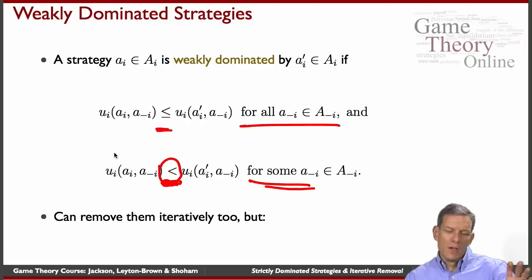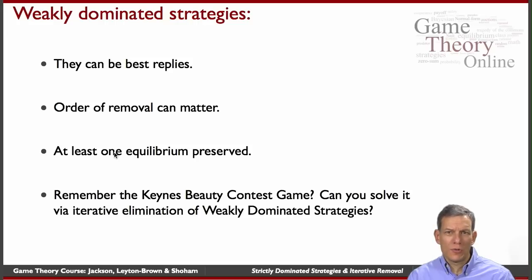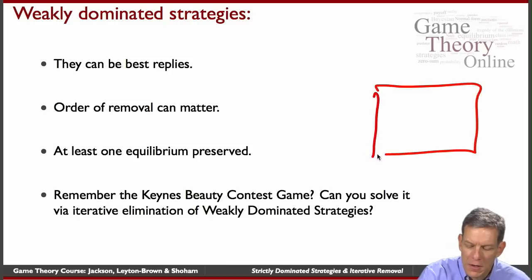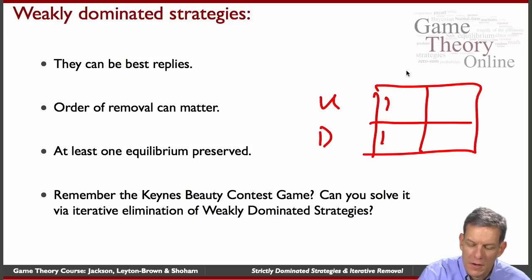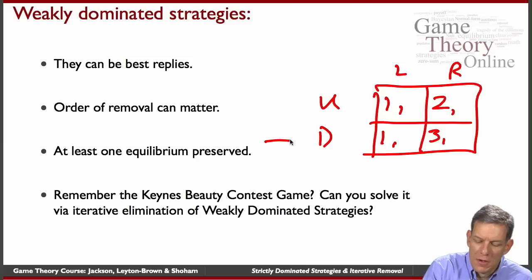Weakly dominated strategies can be eliminated as well — you can iterate through games exactly like we did before. But one thing that's true about weakly dominated strategies is that sometimes they could be best replies. A strategy could be weakly dominated and still turn out to be a best reply. For instance, if the row player can go up or down — if they go up they get a payoff of one against left and right — here they get two, here they get three. So down weakly dominates up: you always get at least as high a payoff and sometimes strictly higher.